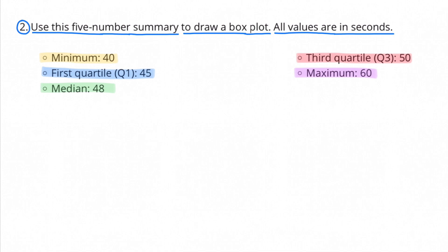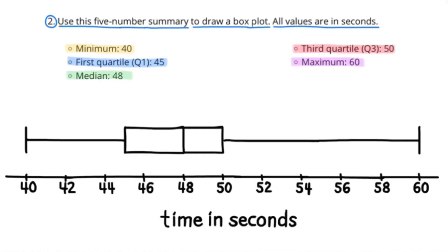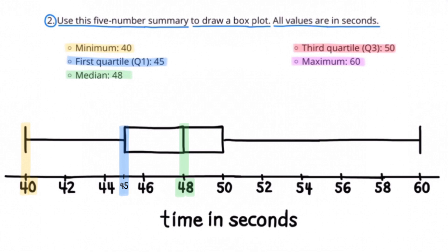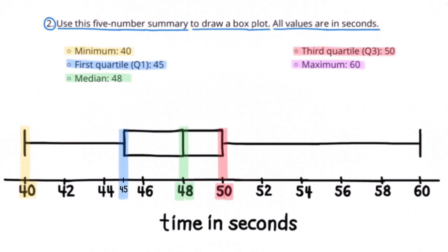Here's a look at the box plot that represents this five-number summary. Its minimum value is 40, the value for its first quartile is 45, its median value is 48, the value of its third quartile is 50, and its maximum value is 60.